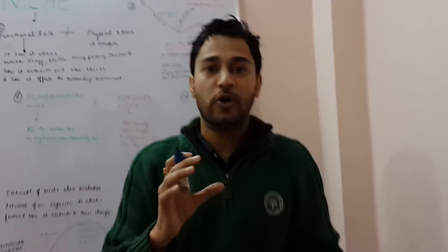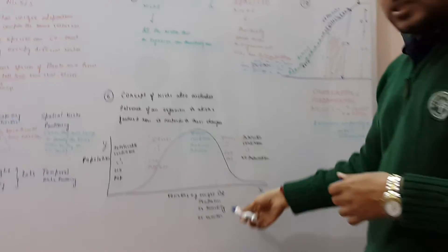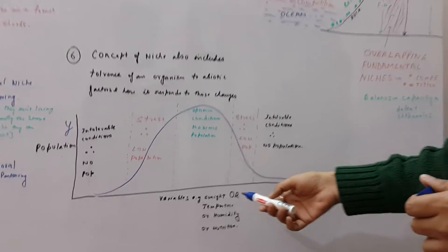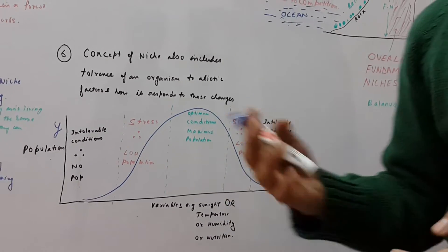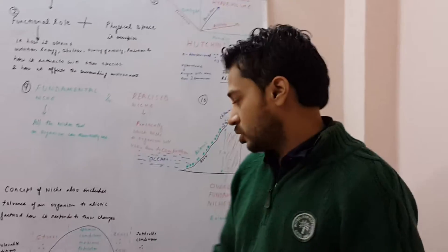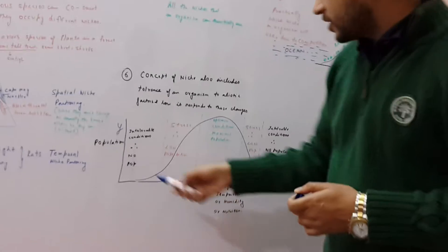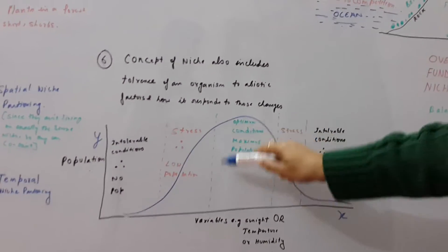Now, the concept of niche also includes the concept of tolerance to various abiotic factors. For example, I've drawn on the x-axis several variables like sunlight or temperature or humidity or nutrition. Remember I talked about the n-dimensional hypervolume and number of dimensions, so these can be either of them are possible. And here I've plotted population. So when the conditions are optimum, maximum population would be here.